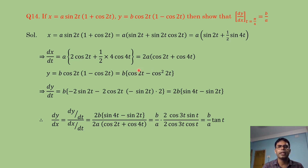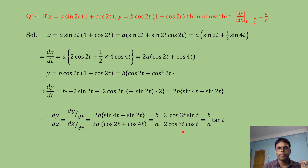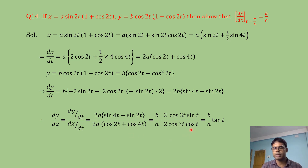So dy/dx = dy/dt ÷ dx/dt = 2b(cos4t − sin2t) / [2a(cos2t + cos4t)]. The factor b/a appears. Applying the sin C − sin D = 2·cos((C+D)/2)·sin((C−D)/2) formula to the numerator and cos C + cos D to the denominator.